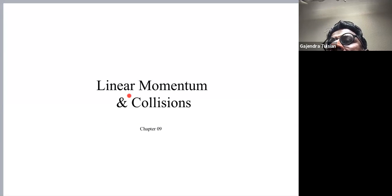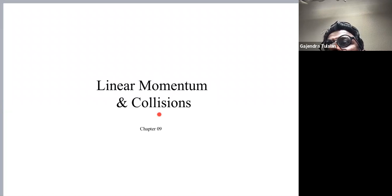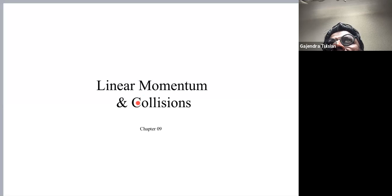This chapter is about linear momentum. We'll learn a quantity called linear momentum and we'll study collisions. It turns out that linear momentum is a quantity that is conserved in collisions — meaning when objects collide, the linear momentum of the system before the collision is equal to the linear momentum of the system after the collision.